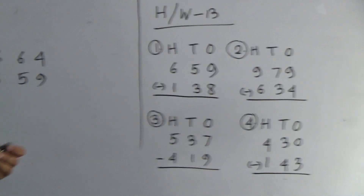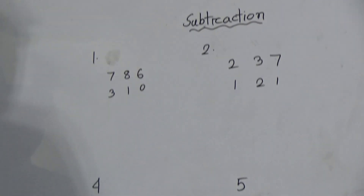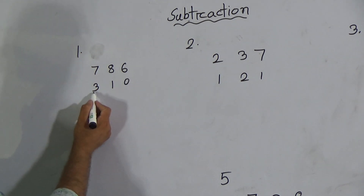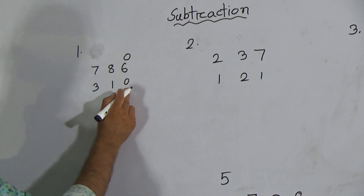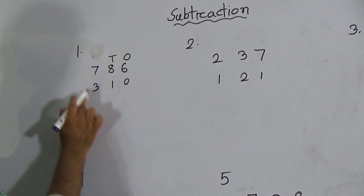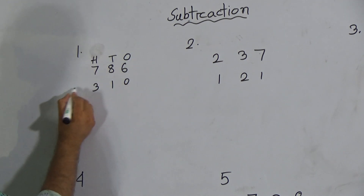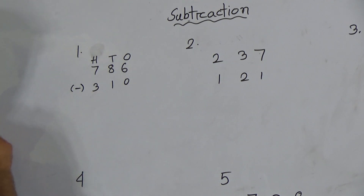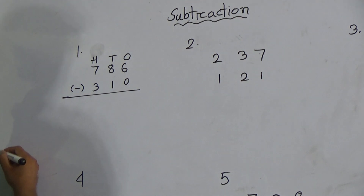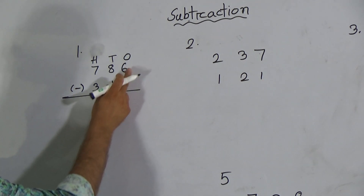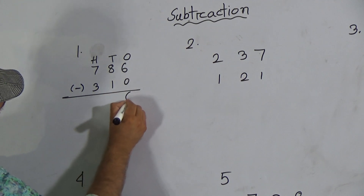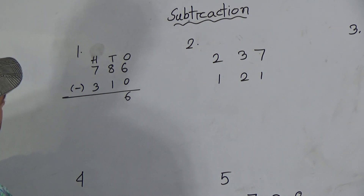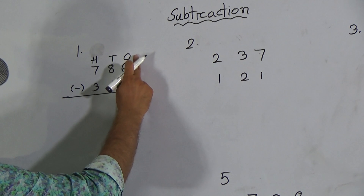Now my students, let's go to the instructor class. Look here, here is question number one. There are two numbers: seven hundred eighty-six and three hundred ten. Six and zero is the ones place, eight and one is the tens place, seven and three is the hundreds place. We have to subtract, so here we use the subtraction sign and draw a line. Now subtract zero from six — zero from six — it will be six. You have to remember that always you will start the subtraction from the ones place digit.